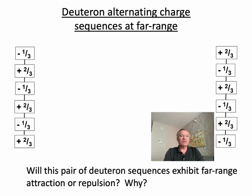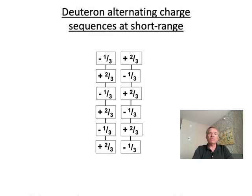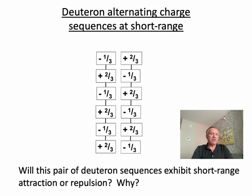Next I'd like to contemplate the same experiment, but this time the sequences are set right next to one another. In this instance, will the sequences attract one another, will there be an attraction between the sequences, or will they repel?